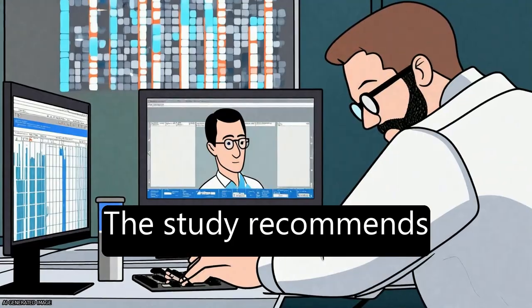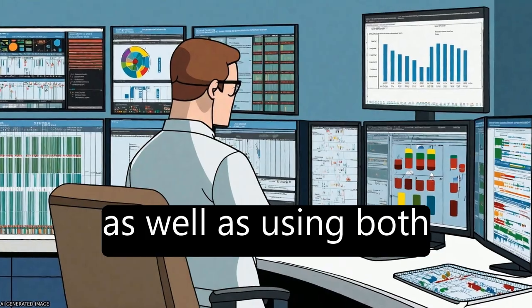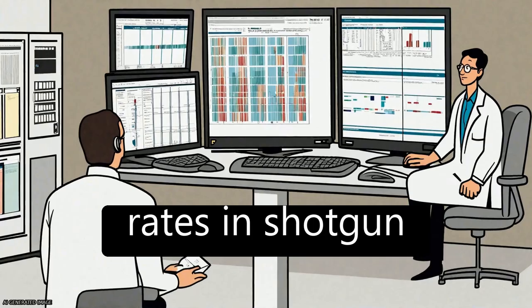The study recommends using internal controls and error correcting base callers when available, as well as using both sequencing primers and deep coverage to compensate for high error rates in shotgun libraries.